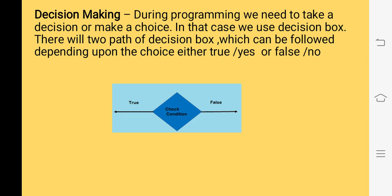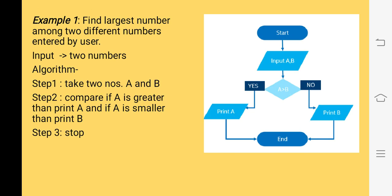When we are drawing a flowchart, we will also use a rhombus as a decision box. We will understand how we can use a decision box. During programming, when we have a condition to check that has only two options — true or false — we use a decision box. With the help of this example, we will understand how to use a decision box.